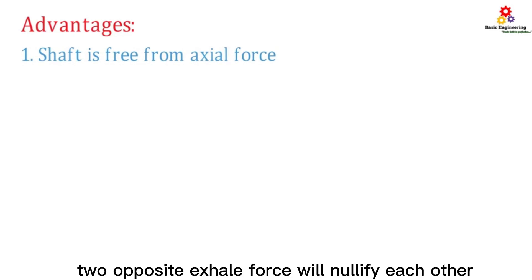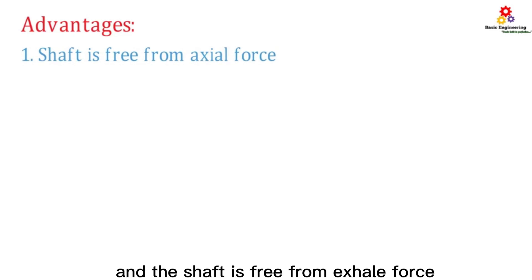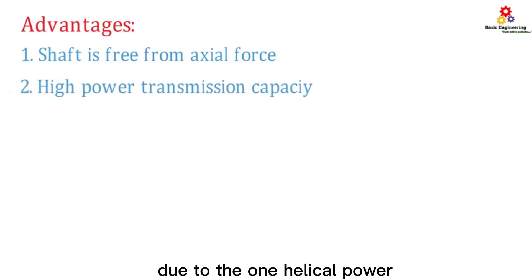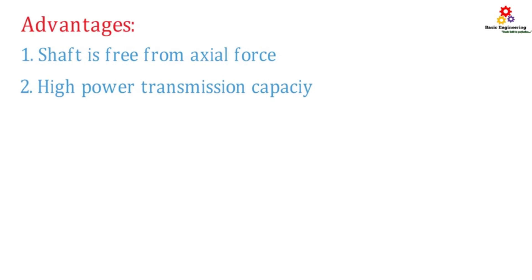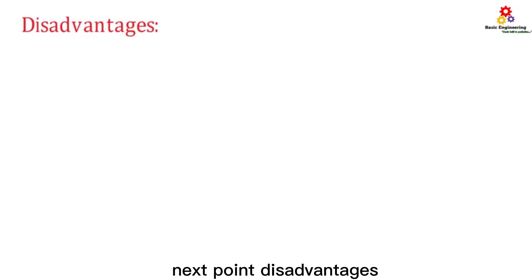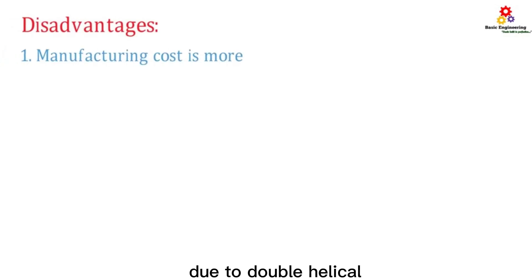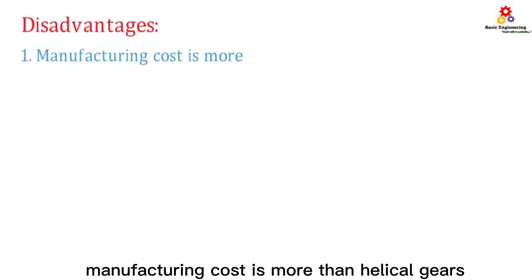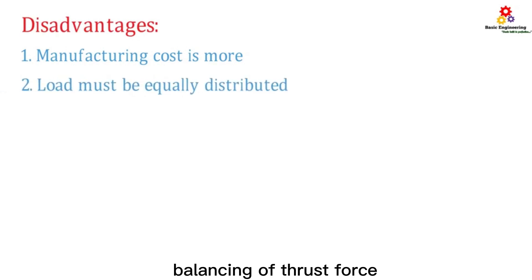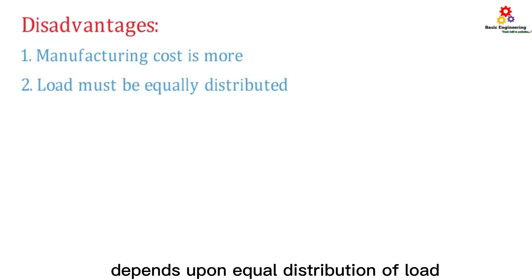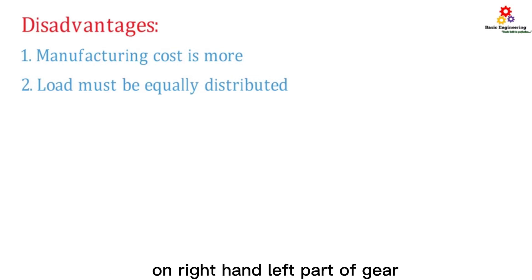Advantages: The two opposite axial forces nullify each other and the shaft is free from axial force. Due to the double helical design, power transmission capacity is high. Disadvantages: Due to the double helical design, manufacturing cost is more than helical gears. Balancing of thrust force depends upon equal distribution of load on the right and left parts of the gear.